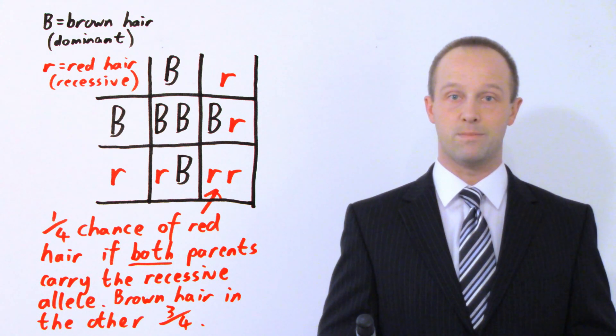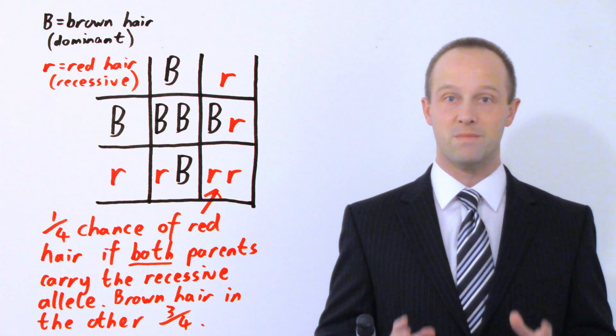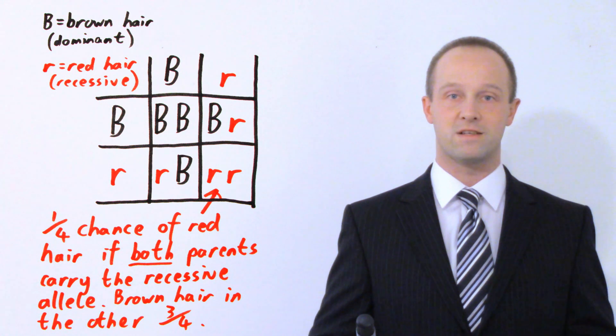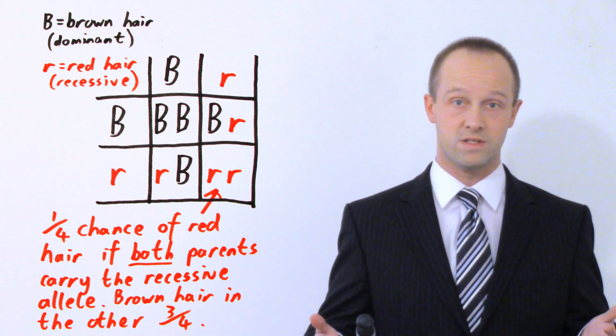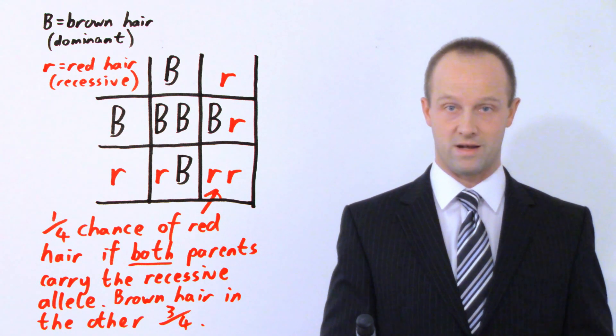Ginger hair is a good example of a recessive trait. Think of the Weasleys from Harry Potter — both the mother and father have red hair, so they can only pass on those red hair alleles, and all their offspring have red hair too. Technically this is a slight oversimplification, as genetics is complex, but in most cases if two parents have red hair, their offspring are likely to have red hair as well.